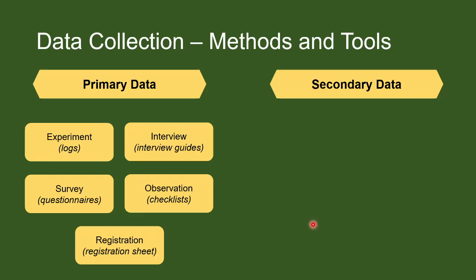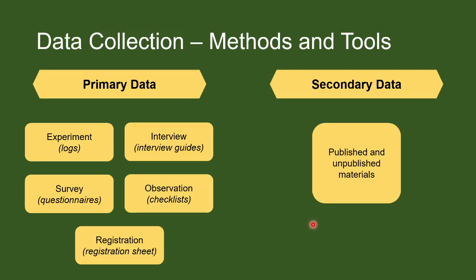And the most simple way of collecting primary data is through registration. For example, you just want to know how many students attended the synchronous class. So, you can generate an attendance sheet or a registration sheet at the end or before the activity or before the class. Next, secondary data. As I mentioned a while ago, these are the data that the other researchers collected. So, when you are going to borrow these data, you have to search published and unpublished materials, and you have to observe proper citation to give credit to the original owner of the data.